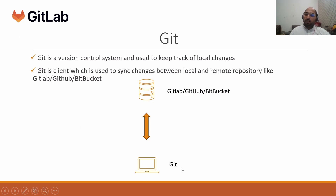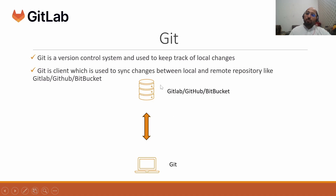We need to keep these code changes on some remote machine. These remote machines are nothing but different servers — it could be GitHub, Bitbucket, or GitLab in our case. After making changes locally and maintaining different versions of your code, we can push our changes to the remote repository. Git is used to keep a sync between the local and remote repository so that multiple people can collaborate on a software and work in a distributed manner.